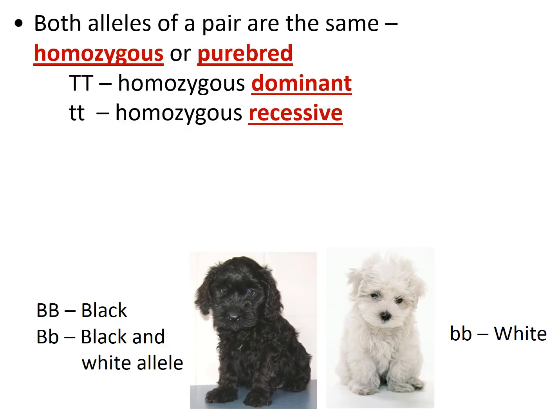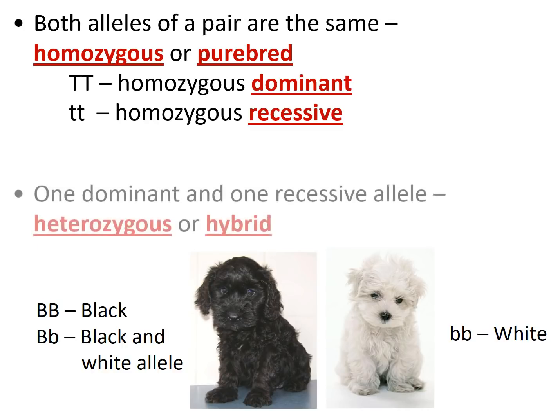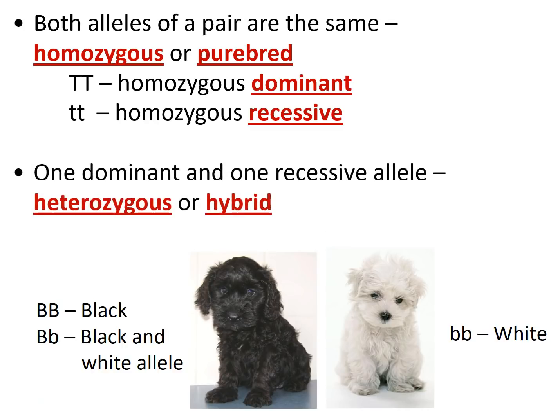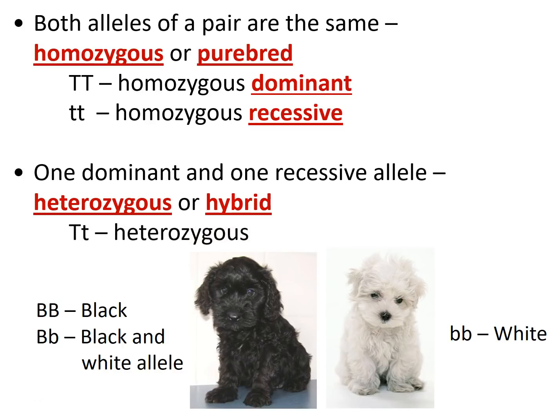If you have one dominant and one recessive allele, then we say that it's heterozygous — hetero meaning other. Another term sometimes used is hybrid. So Tt would be heterozygous, or for the puppy, Bb.